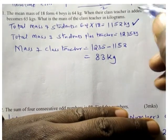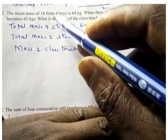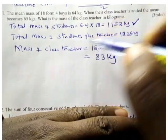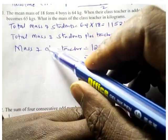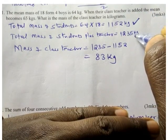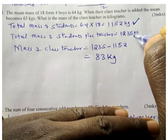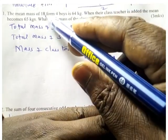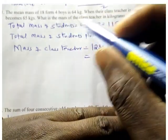The average of the students and the teacher is 65, meaning they are going to be 19 now. So the total mass of students plus the teacher is 1,235. Where did I get 1,235? It is 65 times 19, because when the teacher is added they become 19.